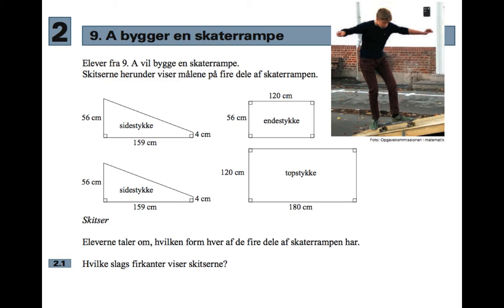Here's a question from May 2014, Question 2: 9A builds a skater ramp. It says pupils from 9A want to build a skater ramp. The sketches below show measurements from four parts of the skate ramp. The pupils are discussing what form each of the four parts of the skater ramp have. What kind of quadrilaterals do the sketches show?